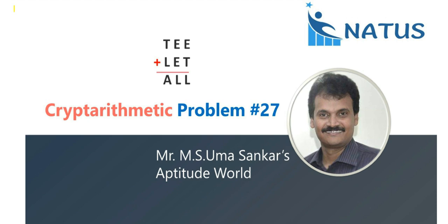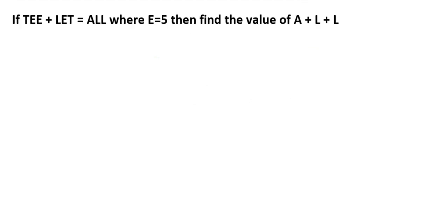Hello everyone. Welcome to Netest and Aptitude. This is the 27th problem of the crypt arithmetic video series. The problem is: t plus LET is equal to ALL, where e is equal to 5. Find the value of ALL.